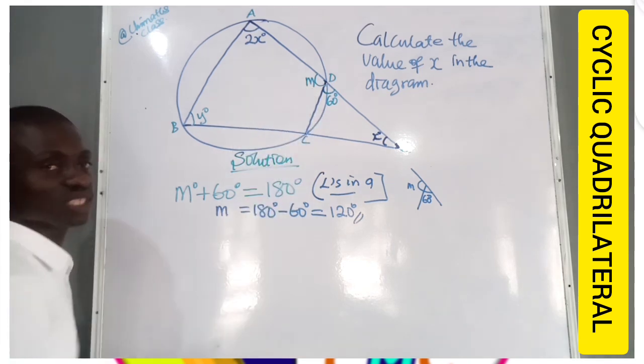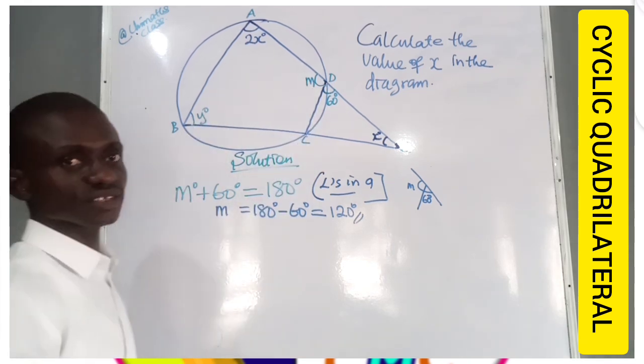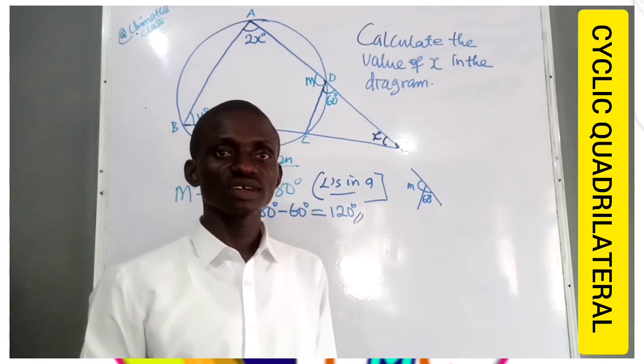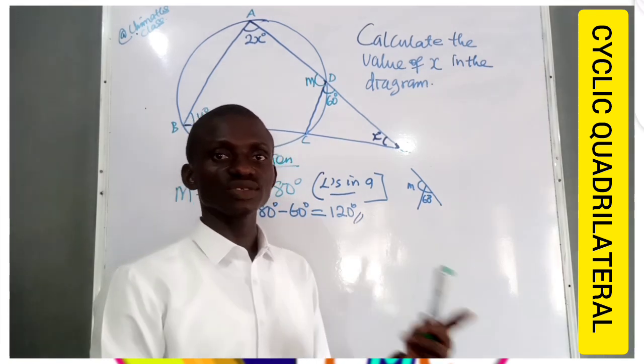So if M is 120 degrees, can we find Y? Yes. Opposite angles of a cyclic quadrilateral, sum of opposite angles, they are supplementary.